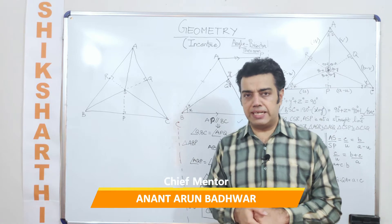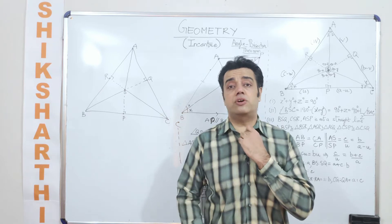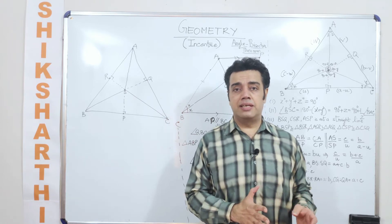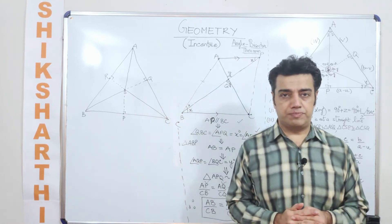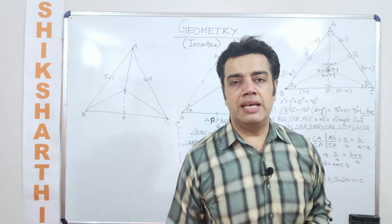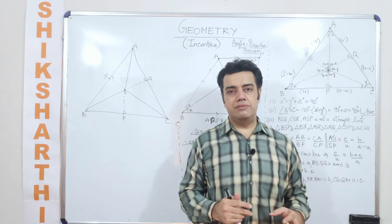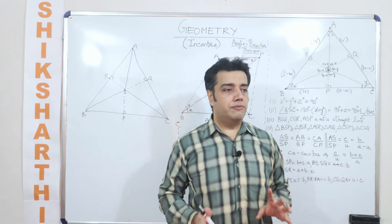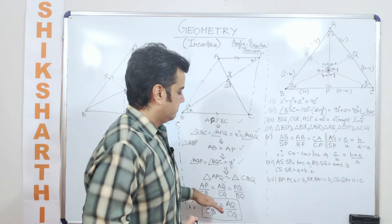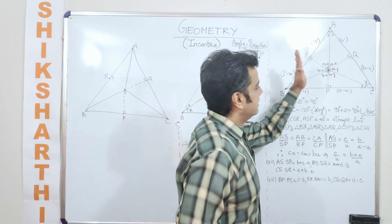In my first video on incenters, we had found out various things. We had talked about how to use various theorems along with angle bisectors, and we had deduced what is the angle bisector theorem. Now in this video, we'll be talking about the length of the sides, and also the ratio of the incenter versus other things inside the triangle. For that, we will refer to this diagram — this is the angle bisector theorem we established in the first video, and we'll be using various concepts inside this triangle.